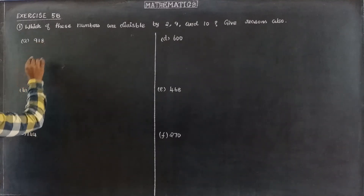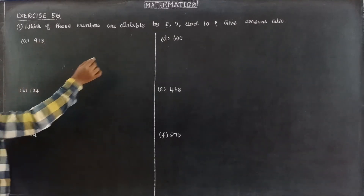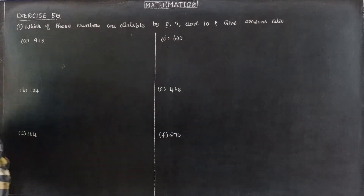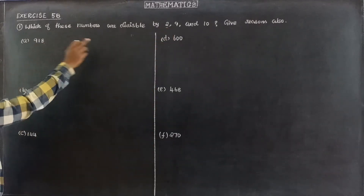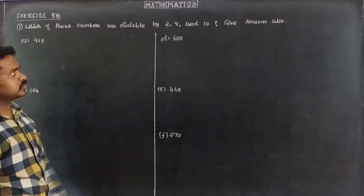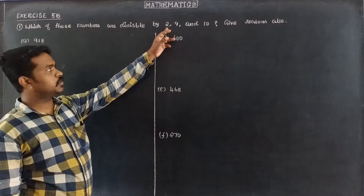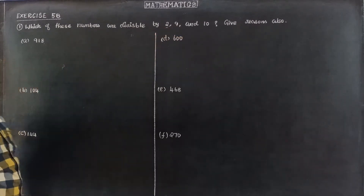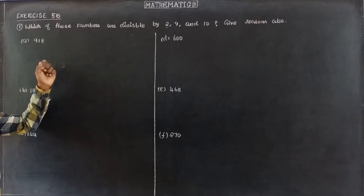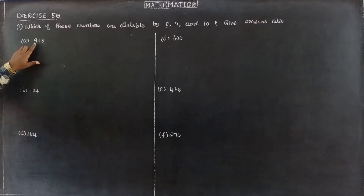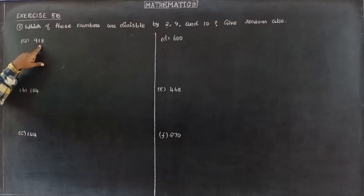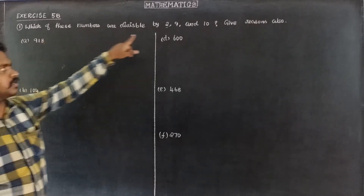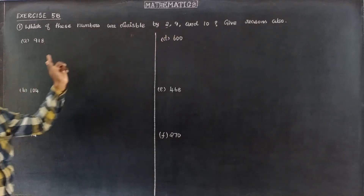First of all, 918. All even numbers are divisible by 2, so 918 is divisible by 2. For divisibility by 9, the sum of the digits must be divisible by 9. The digits are 9, 1, and 8: 9 plus 1 is 10, 10 plus 8 is 18. Since 18 is divisible by 9, the number is also divisible by 9.